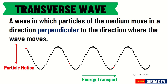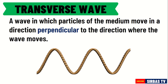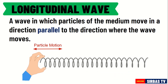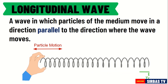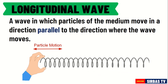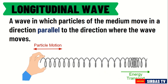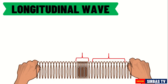A transverse wave moves vertically up and down. A wave in a rope is an example of transverse waves. Next is a longitudinal wave. A longitudinal wave is a wave in which particles of the medium move from left to right. A moving slinky is an example of a longitudinal wave. The parts in the slinky where the coils are close together are called compressions.